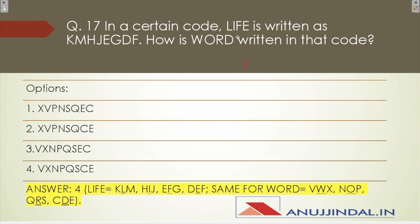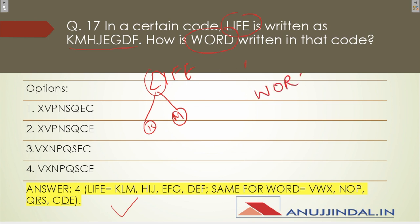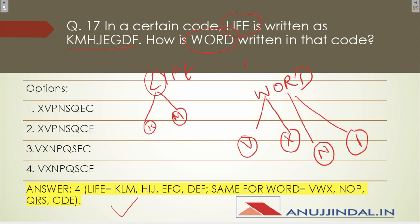Question seventeen is coding-decoding from the alphabet series. LIFE is written as K M H J E G D F. The logic is that each letter is represented by the letter before it and the letter after it. Applying the same logic to WORD: W gives V W X, O gives N O P, R gives Q R S, D gives C D E. So the correct answer is the fourth option.